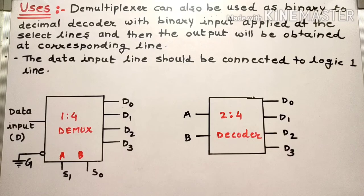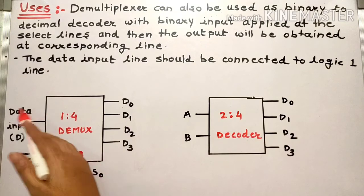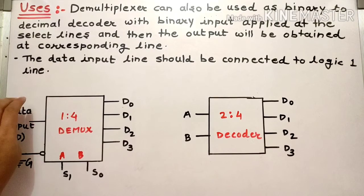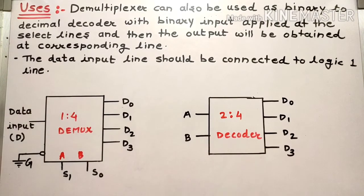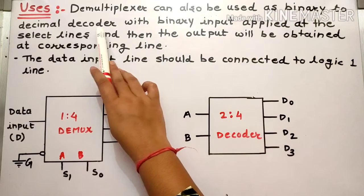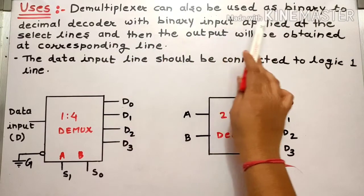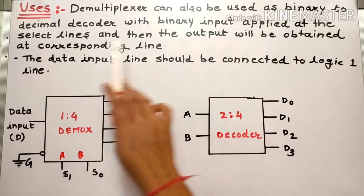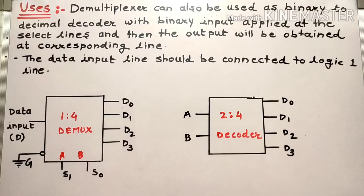The only thing not present in the case of a decoder is a data input. That data input is what distinguishes the demultiplexer. The demultiplexer can become a binary-to-decimal decoder when binary input is applied at the select lines, and the output is obtained at the corresponding output line.